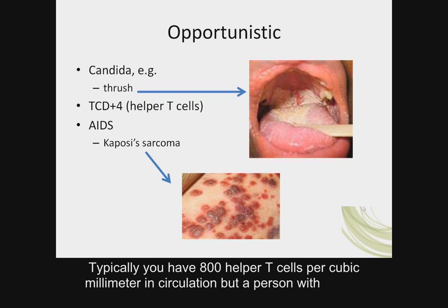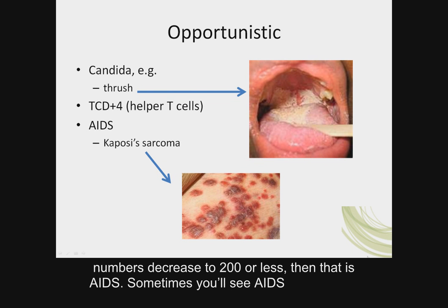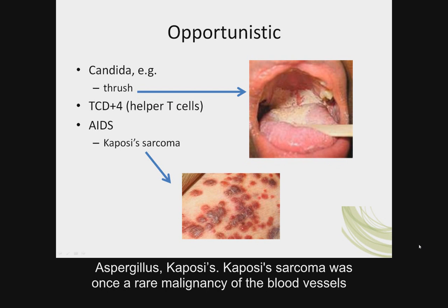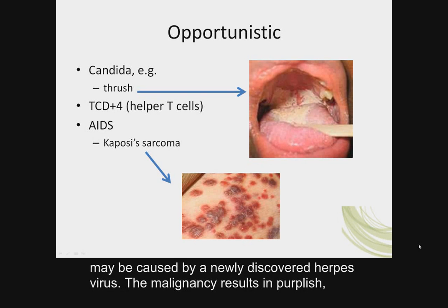Another obviously immunocompromised population would be those with AIDS. Typically you have 800 helper T cells per cubic millimeter in circulation. But with HIV, the virus attacks specifically the CD4 or helper T cells, and their numbers decrease to 200 or less — then that is AIDS. Sometimes you see AIDS patients with 50 or 25. That's when you see opportunistic infections like Candida, Aspergillus, and Kaposi's sarcoma — once a rare malignancy of the blood vessels but now associated with AIDS. Recent research suggests this malignancy may be caused by a newly discovered herpes virus, resulting in purplish grape-like lesions in the skin, gastrointestinal tract, and other organs. People with AIDS die from opportunistic infections, typically pneumonia.